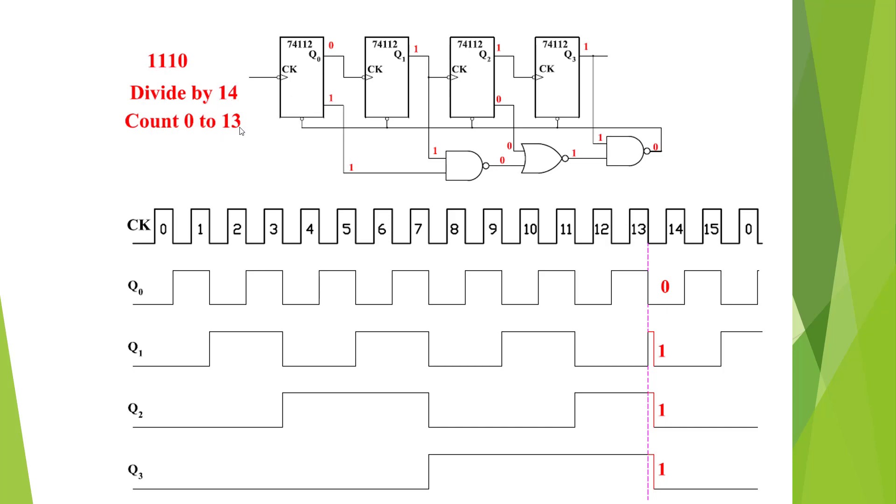Which is going to count from 0 to 13. And you see this guy here is 1, 1, 1, 0. Here's our glitches. We're going to reset at 14 and then count to 13.